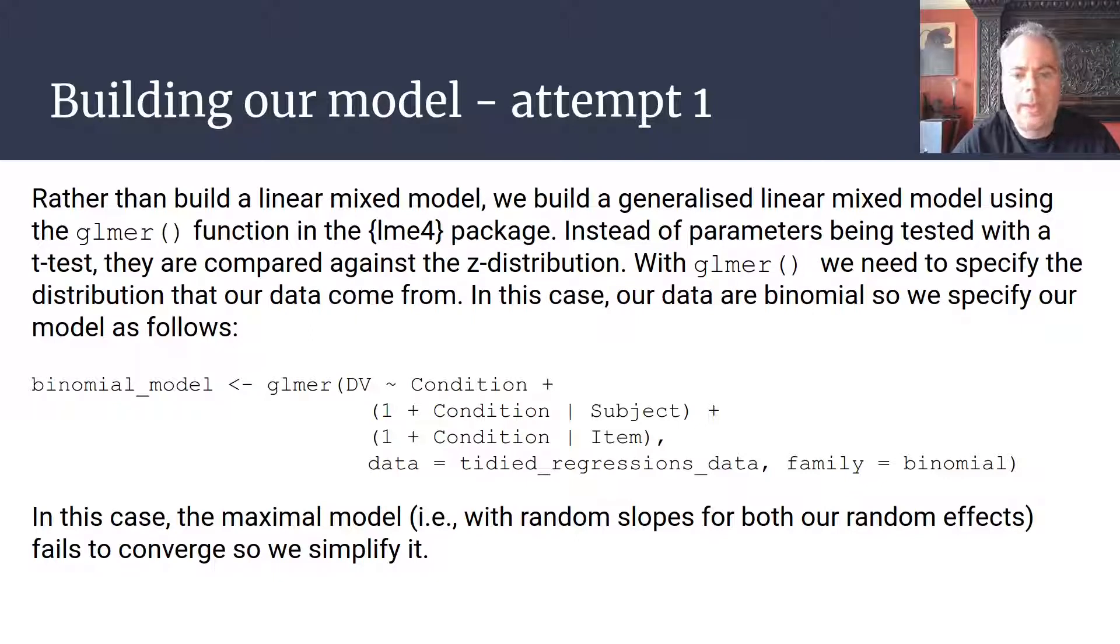In this case, our data are binary—ones and zeros—so you specify the family that we're sampling from as being binomial. Other than that, everything's pretty much the same. We're going to build our generalized mixed model where our dependent variable is predicted by condition, and we're going to try and model random effects of subjects and items with both random intercepts and random slopes. As I said, we're also specifying the family as being binomial. But if we were to try and build this model and run it, we'd get a convergence error—the same sort of error that we found in the previous video.